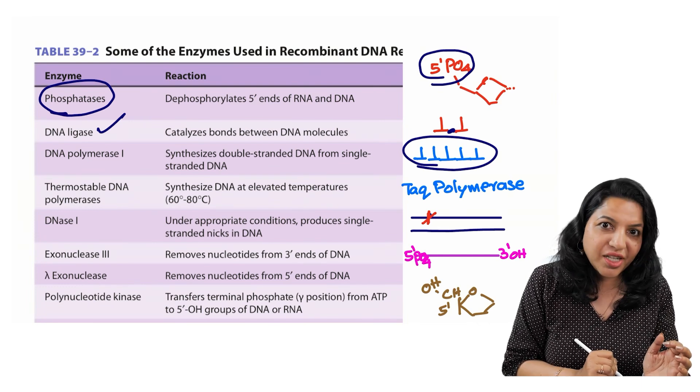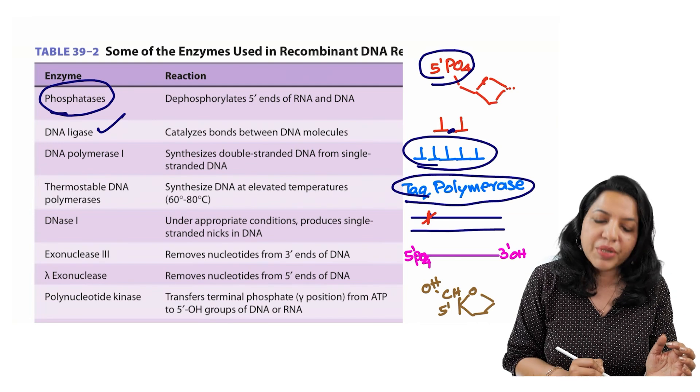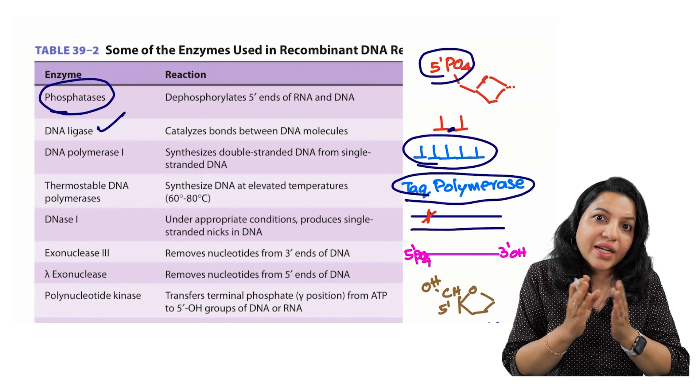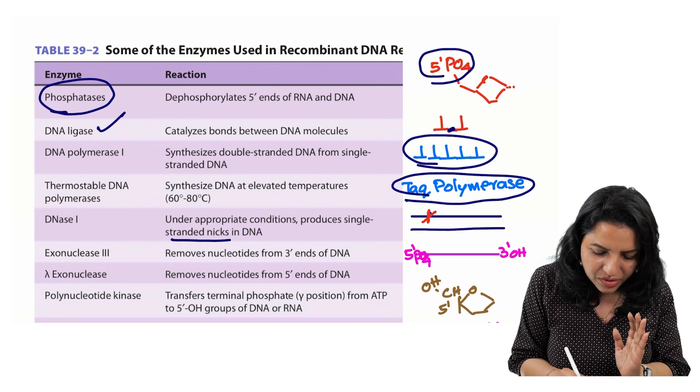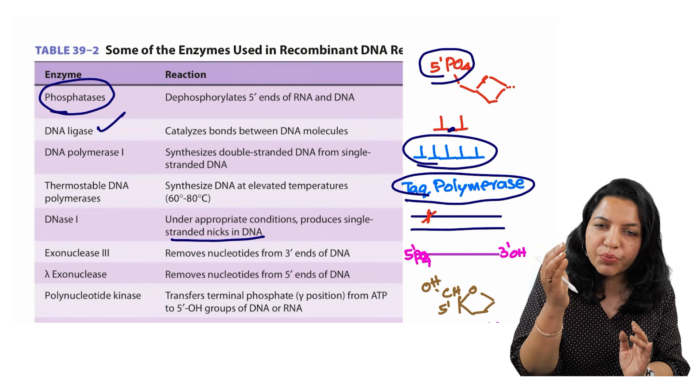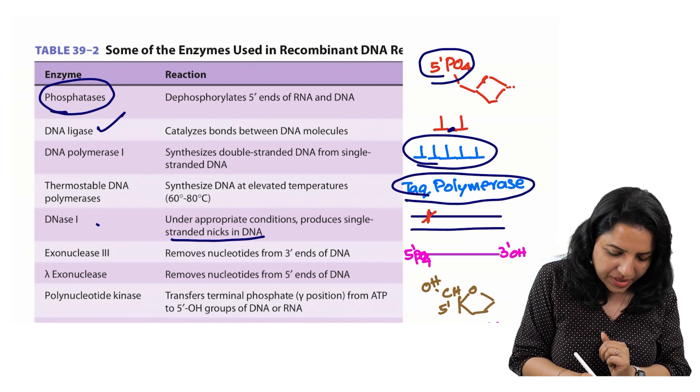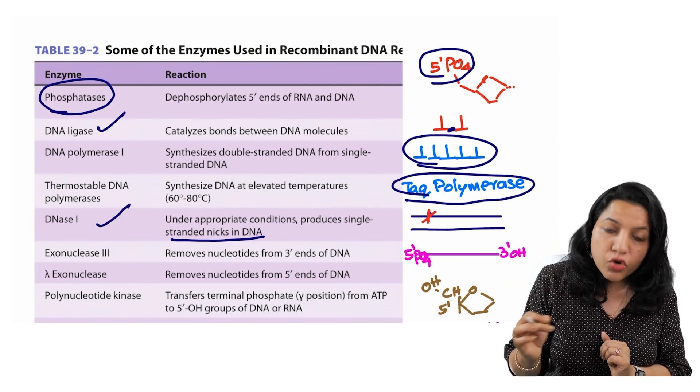Now, thermostable DNA polymerase, you know where is it used? That is how Taq polymerase is used in the PCR. Then DNase 1. DNase 1 means it is the DNA cutting enzyme or in other words, you can see it is something which causes nicks in the DNA or it produces nicks and it degrades the DNA. That is called as DNase 1. Where is it used? It is used in DNA footprinting.